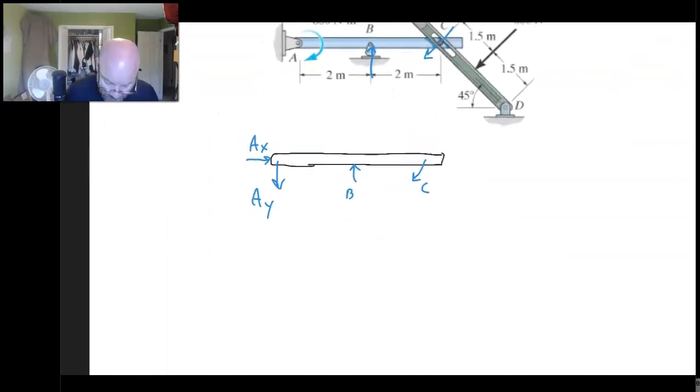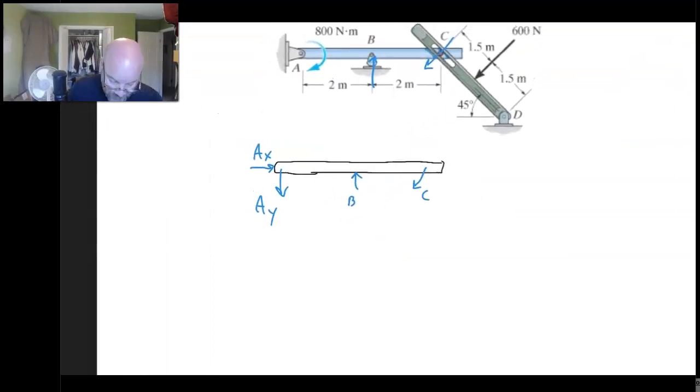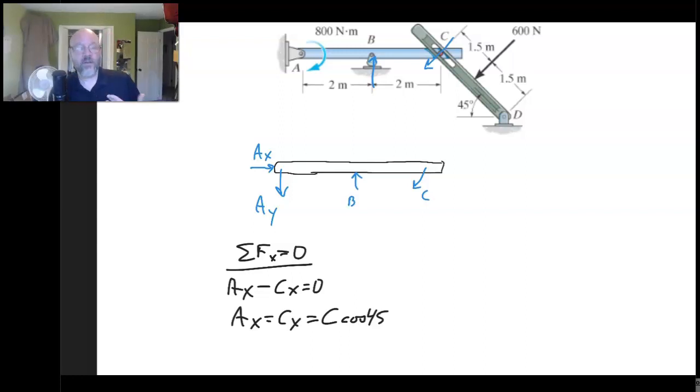All right, so let's actually begin with our horizontal forces. So here we go, and so we're going to have Ax minus Cx, so Ax is Cx, and that is just C cosine 45. Okay, so if we had C, boom, we plug it right in there and we're good to go.